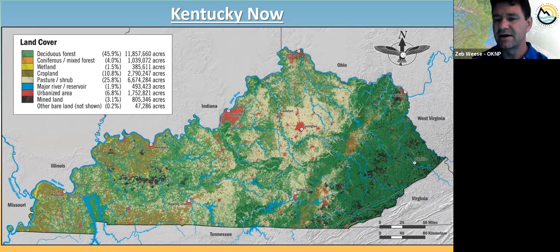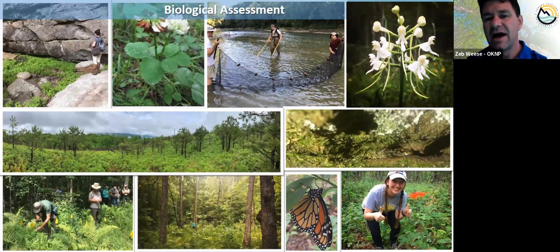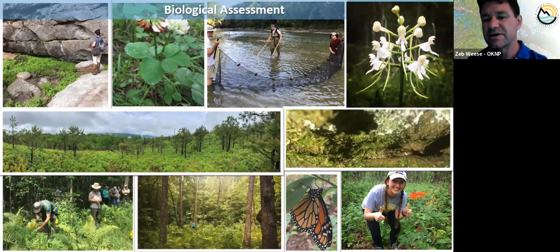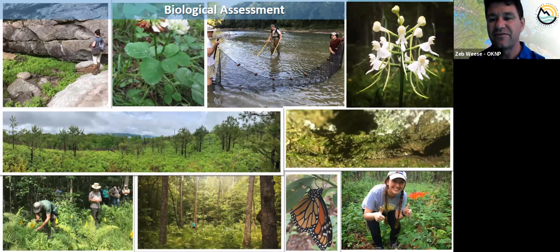Everything's been turned into agricultural or urban areas - there aren't many places left that we would call intact pre-settlement ecosystems. Our job is to find those as best we can and protect them. We have a pretty big suite of tools to accomplish that. We have a team of biologists - about a dozen on staff right now in our biological assessment branch. We are very botany-heavy because we are the only agency in Kentucky - state or federal - whose primary focus is rare plants.